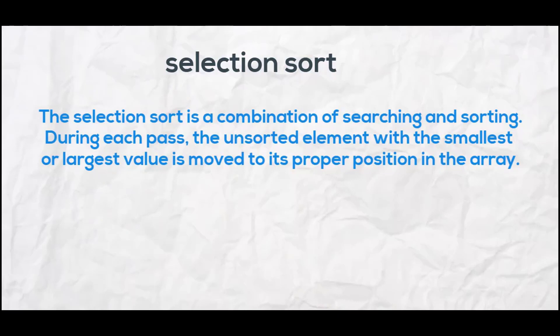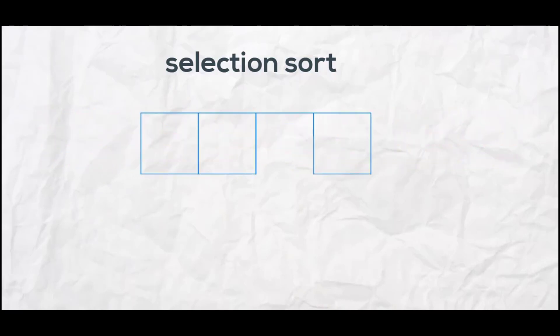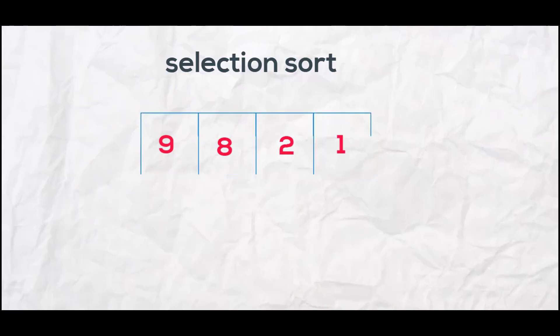Let us look at an example. This is an array of size four with values 9, 8, 2, and 1. In selection sort we pick the smallest element of the array and place it in the first position. Here, 1 is the smallest element and is to be placed at the first position.